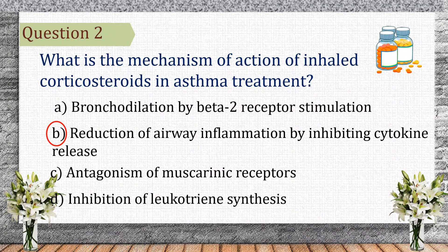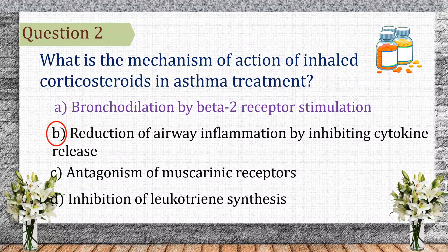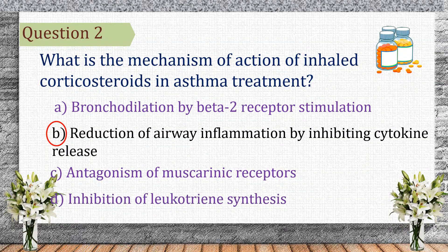Let's see the other options. Beta-2 agonists, like albuterol, cause bronchodilation, but that's not how corticosteroids work. Muscarinic antagonists, like tiotropium, block acetylcholine, not inflammation. Leukotriene inhibitors, like montelukast, work differently and are mainly used in allergic asthma.